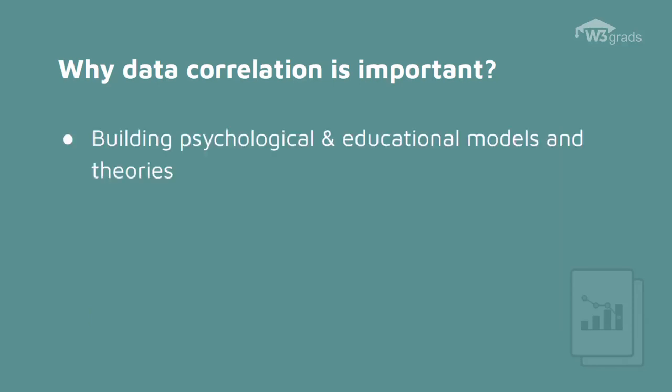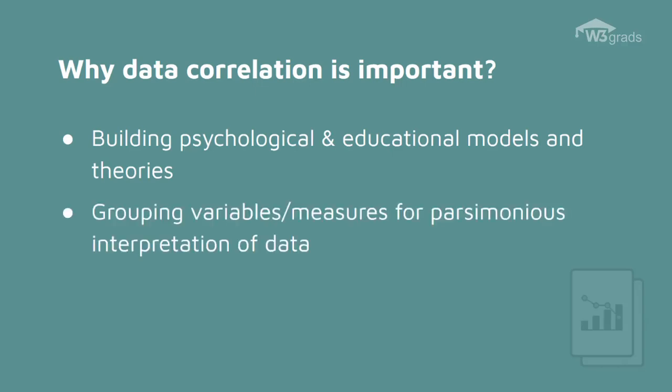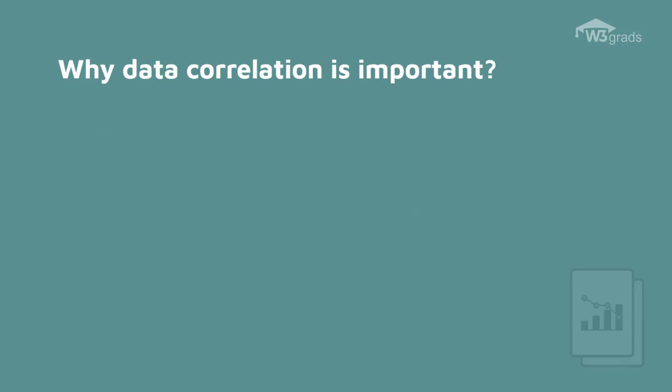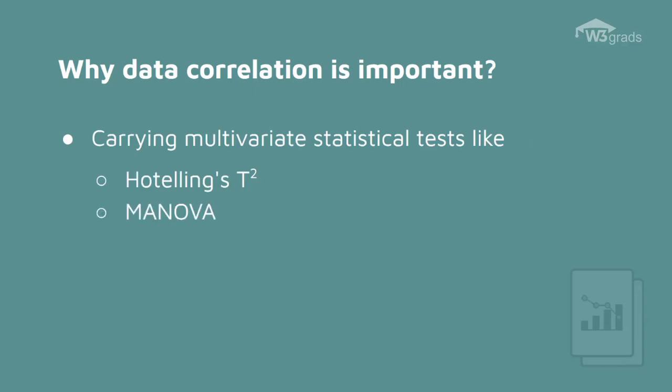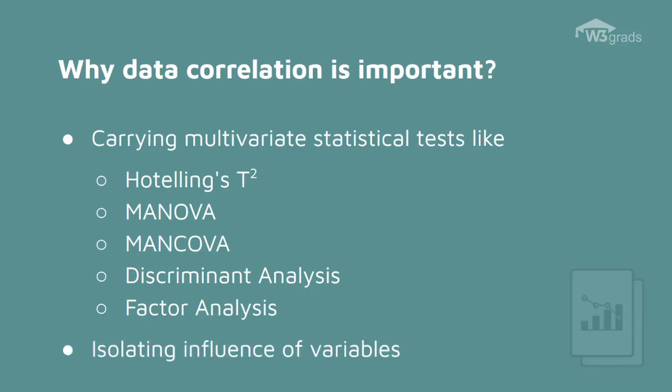Data correlation is crucial for creating psychological and educational models and theories. It is important for combining the variables or measures for parsimonious interpretation of data. In addition, it is important in carrying out various multivariate statistical tests such as Hoteling's T-square, MANOVA, MANCOVA, discriminant analysis, and factor analysis. Data correlation is also very important for isolating the influence of variables.